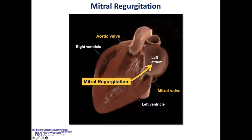Mitral regurgitation occurs when the mitral valve does not close properly, and blood, instead of going forward out through the aortic valve, regurgitates or leaks back into the left atrium. This causes a fluid overload on the left side of the heart, and the left ventricle can begin to dilate. Atrial arrhythmias like atrial fibrillation can occur as a result, and eventually heart failure when the disease becomes more advanced.